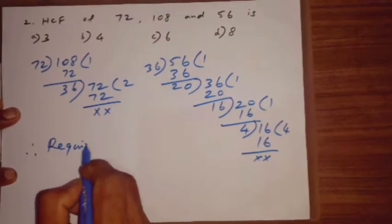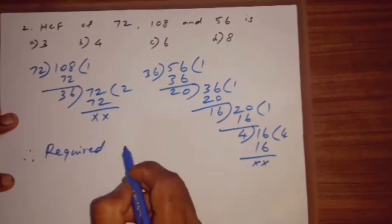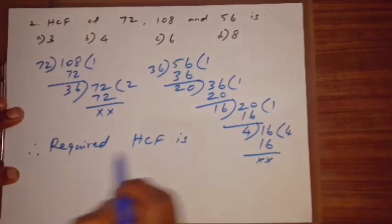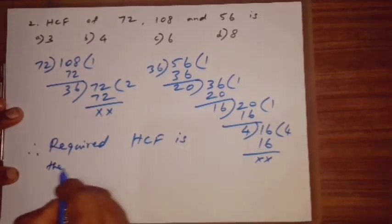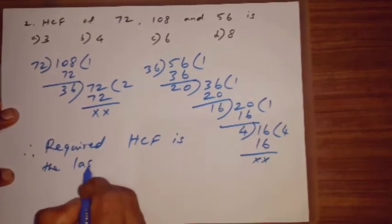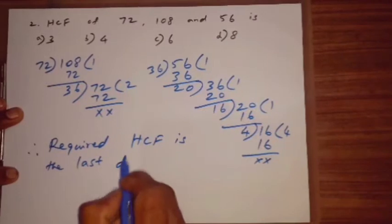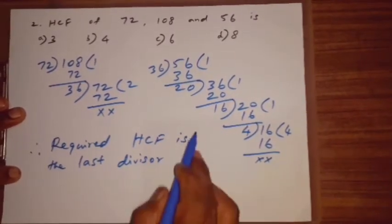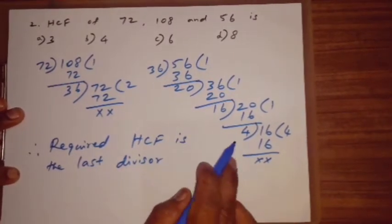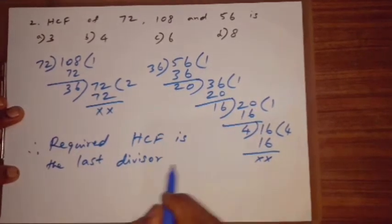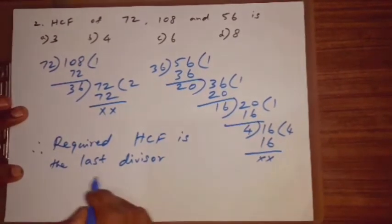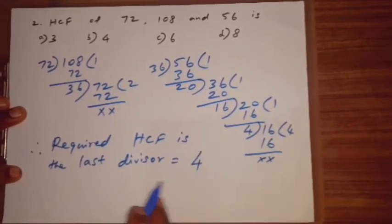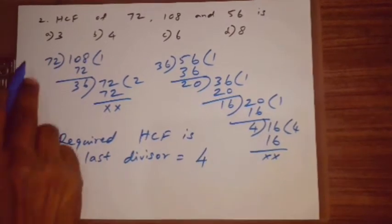Therefore, required HCF is the last divisor. Last divisor is 4. Equal to 4. 4 is the correct answer.